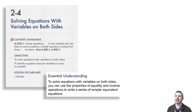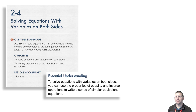The essential understanding: to solve equations with variables on both sides, you can use the properties of equality and inverse operations to write a series of simpler, equivalent equations.